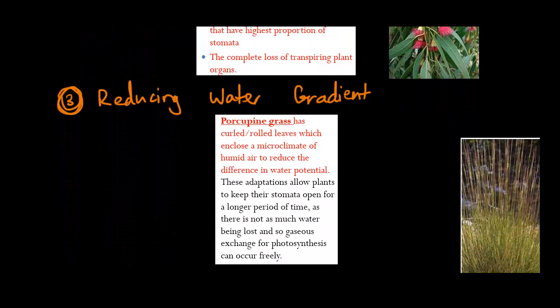So now we've got reducing water gradient. Now this one's quite tricky, and it's basically so that plants can keep their stomata open for a longer period of time, as there is not much water being lost, and so gases exchanged for photosynthesis can occur freely. Water gradients, it's not something that I would particularly use in my exam because it's hard to explain, even for me. In explaining water gradients, what I mean to say is that the gradient of water is actually, by the plant itself, through these mechanisms, is controlled, and therefore there is not as much water being lost, and so gases exchanged for photosynthesis can occur freely.